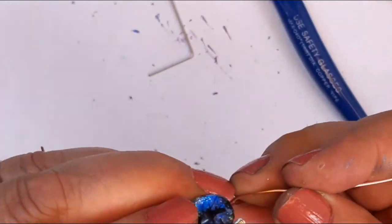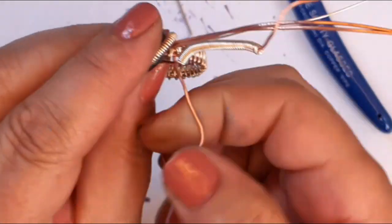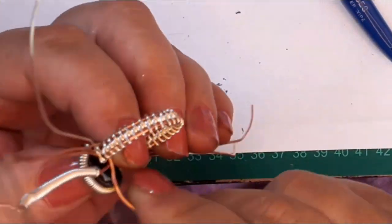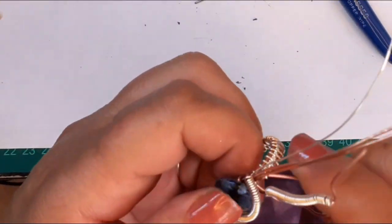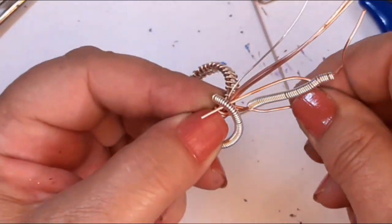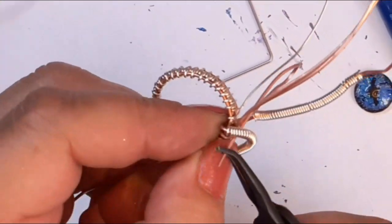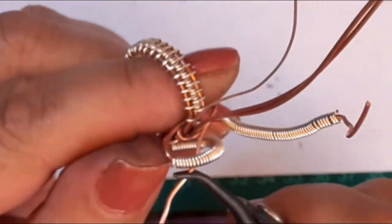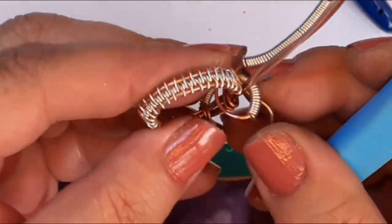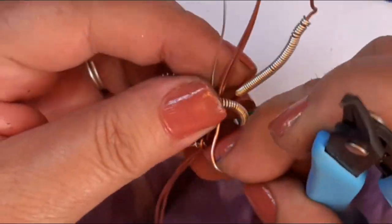As you can see here, I've tucked it under the ring, pull it firmly and then over all the wires. And I've tucked it. I've moved the stone out. It just makes it easier for me to pull it in because trying to work with the stone, it gets a bit difficult because it keeps falling out.